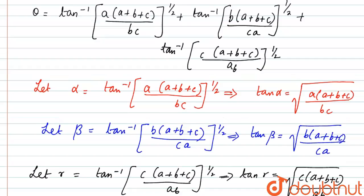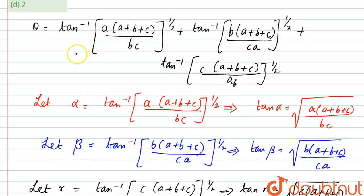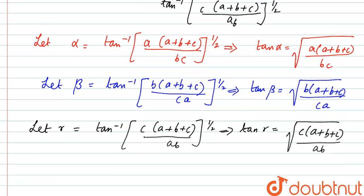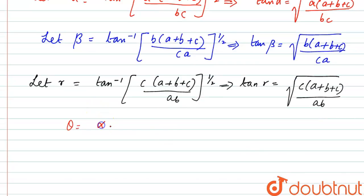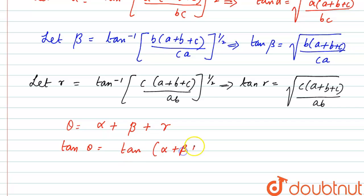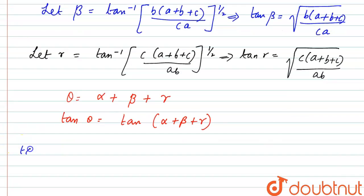We have got these three values. From here, theta equals alpha + beta + gamma, since we have taken the first term as alpha, second as beta, and third as gamma. Next we will find the value of tan alpha + tan beta + tan gamma.